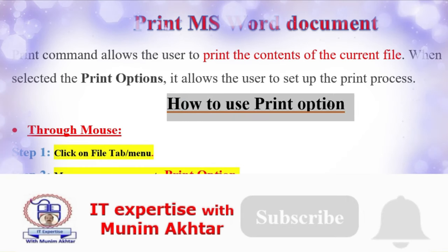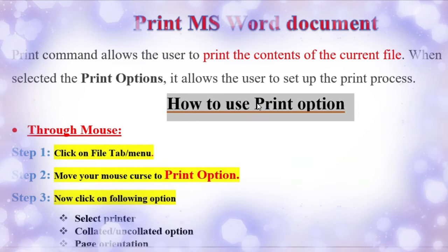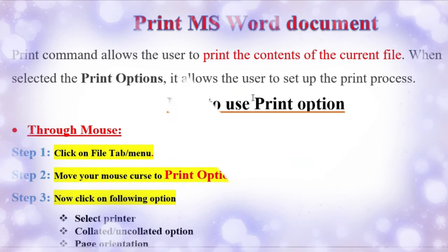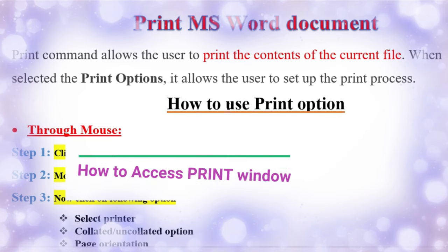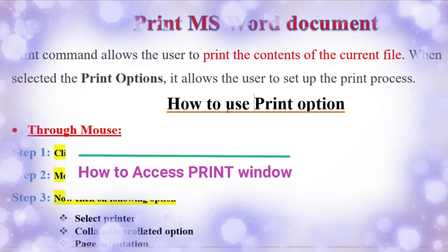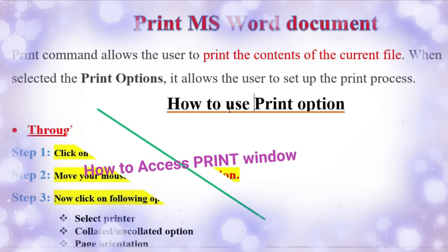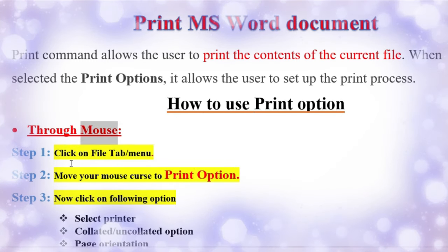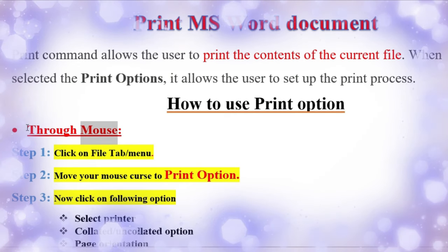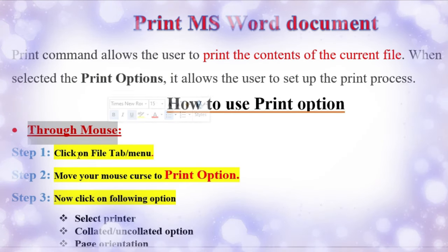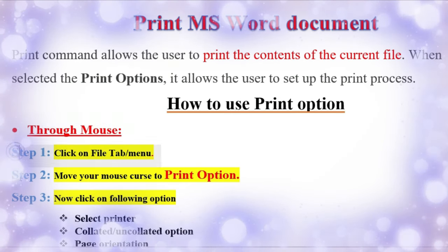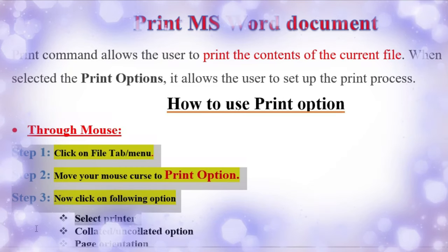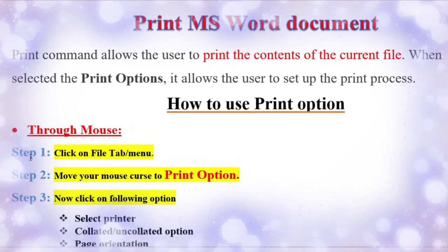How to use the print options? Very simple. There are two methods. The first one is mouse and the second one is keyboard. If you are going to use the mouse, you must follow four main steps. Let's discuss what those main steps are.